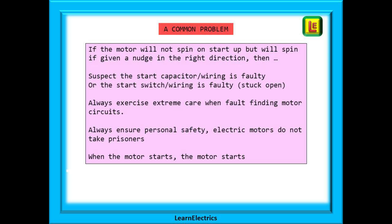A common problem that you may come across is where the customer reports that the motor just sits there buzzing but not moving when first switched on. However they say that if they give the shaft a nudge the motor spins fine until it is switched off again. In these cases suspect the start capacitor or wiring is faulty or the start switch or switch wiring is faulty, usually stuck in the open position. This means that there is no second winding or capacitor in the circuit to give a phase difference that will cause the motor to rotate. Without some initial movement the rotor will not spin.